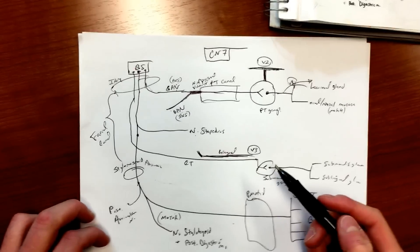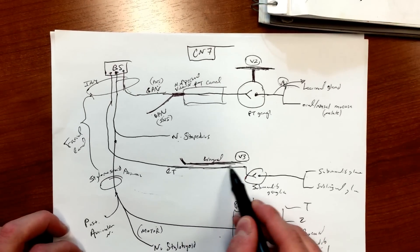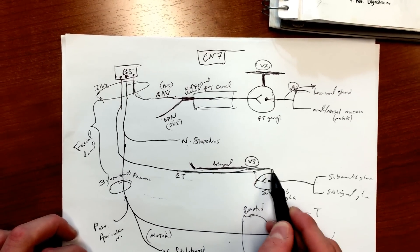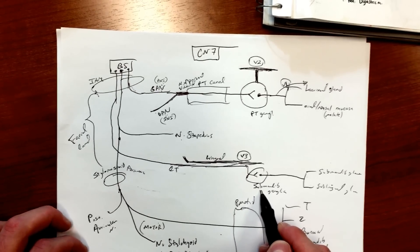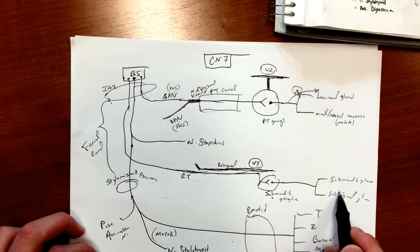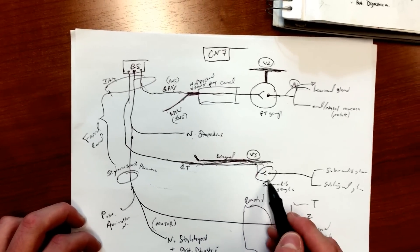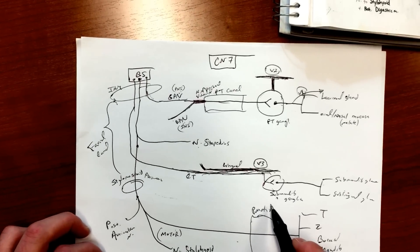So that's what's happening here - the chorda tympani is gonna come and hitch a ride on lingual nerve to get to this ganglia here, if that makes sense. So it's coming out, it needs to get there, so it's gonna jump on lingual nerve and that's how it's gonna get to this submandibular ganglia to do its thing.